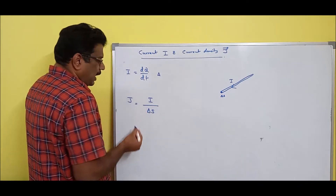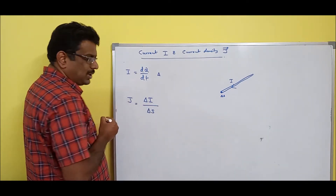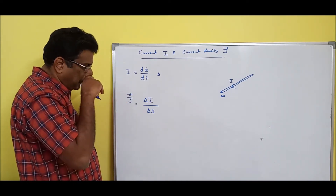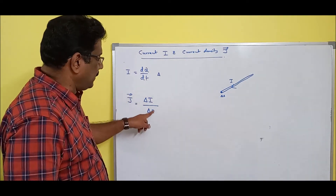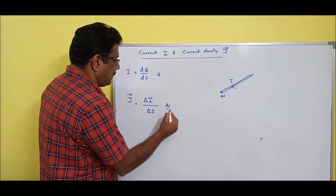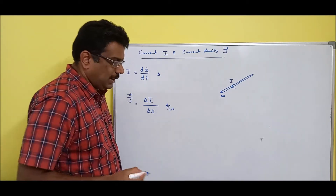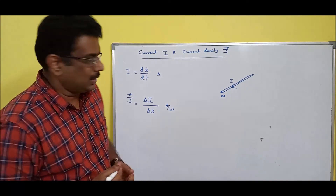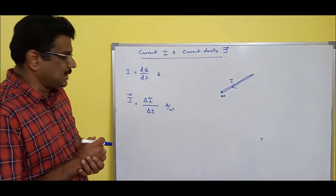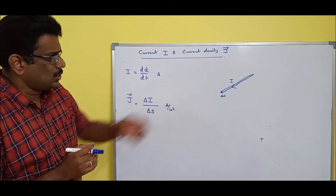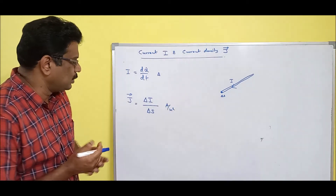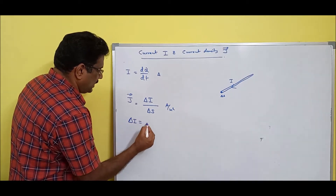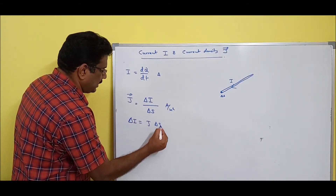So for delta S, there is a delta amount of current. In that cross-sectional area, the unit works out to ampere per meter square. J is nothing but delta I by delta S. If you cross multiply: delta I is nothing but J times delta S.